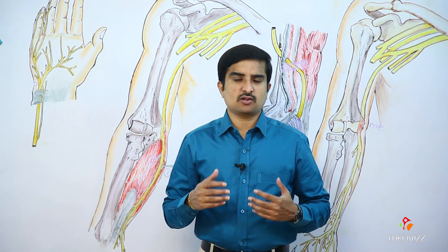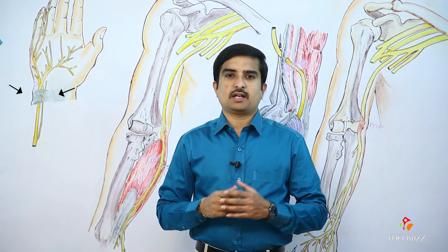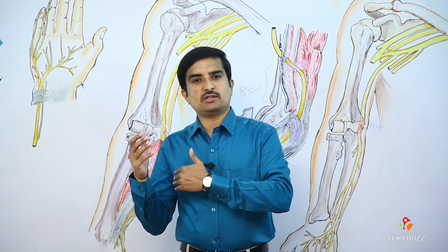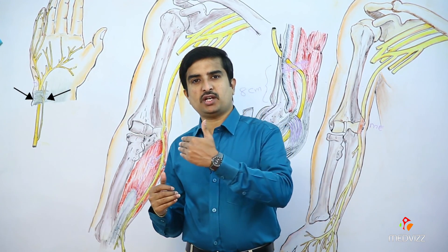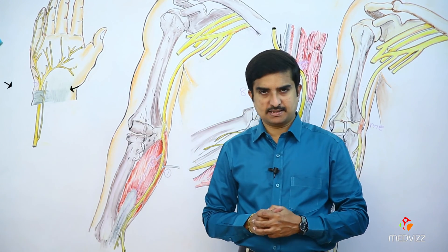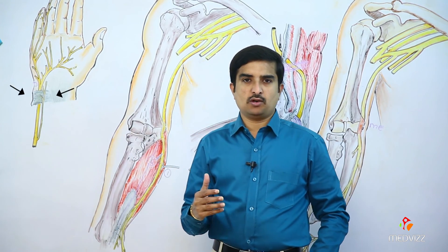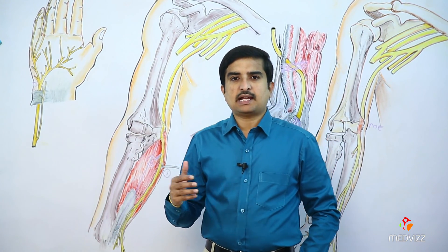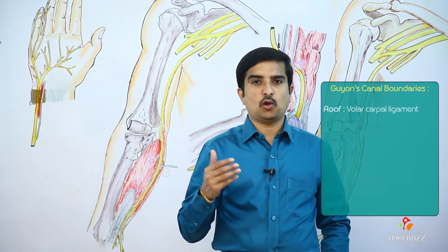Before we discuss the clinical characteristics of the ulnar tunnel syndrome, let us talk about the Guyon's Canal. The canal extends from the proximal extent of the transverse carpal ligament to the aponeurotic arch of the hypothenar muscles. The canal is approximately 4 cm long and its contents include the ulnar nerve as well as the ulnar artery.